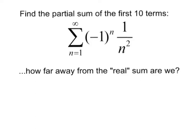So let's just start writing some terms down. If I plug in one, I get negative one to the first, and then multiply by one over one squared. So the first term is negative one.